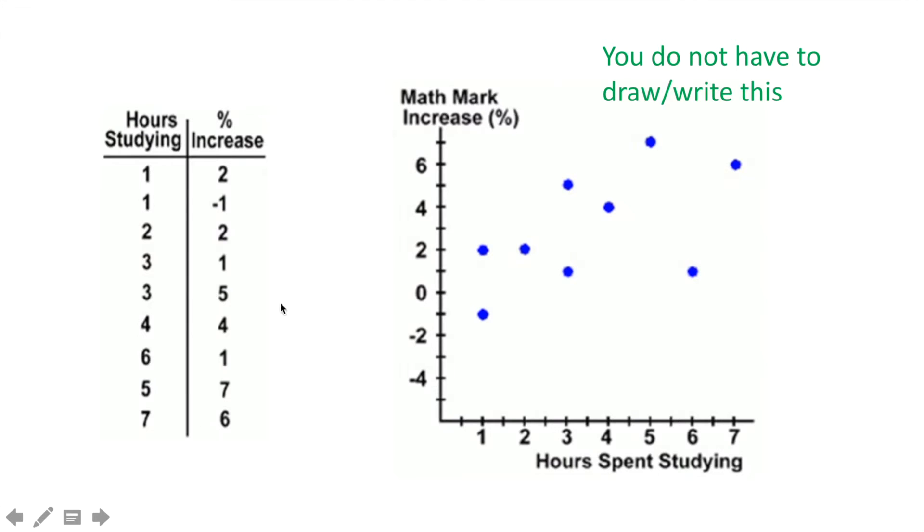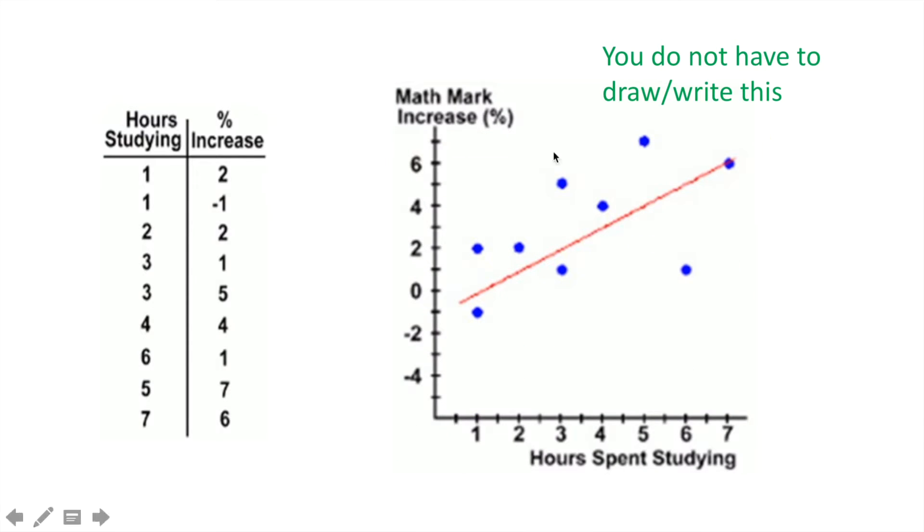Let's say we obtained the following data to explore the amount of hours spent studying, and the percent increase in one's marks. When we plot these coordinates on the graph, we get this scatter plot here, and when we draw a line of best fit, we would get something that looks like this.